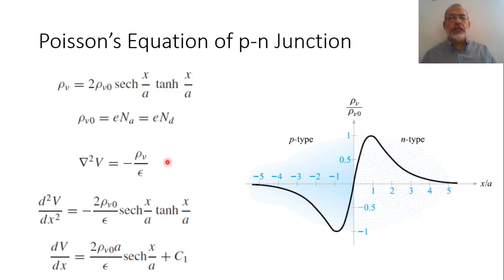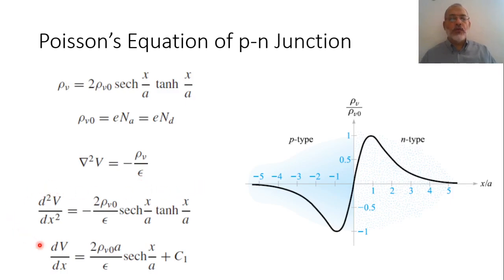The only difference in this case is that we have volume charge density. The problem here is exactly like the parallel plate capacitor — it depends only on the x direction. So nabla squared is simply d²V/dx² equals minus rho_V over epsilon. We are going to integrate this equation twice, and each integration will introduce a constant. From these two constants, we apply the boundary conditions for the problem to find them.